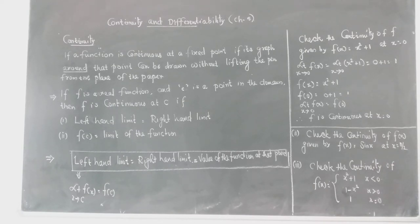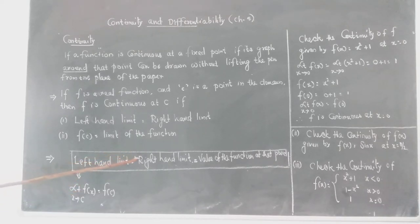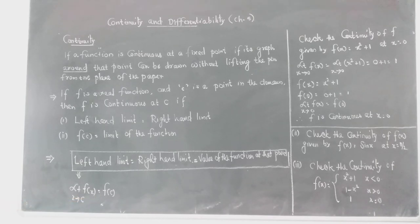These two conditions can be combined into a single statement: the left-hand limit equals the right-hand limit, and this becomes the limit of the function. So the key statement is: limit as x tends to c of f(x) equals f(c). This means the limit of the function and the value of the function are equal at c, and then the function will be continuous at c.